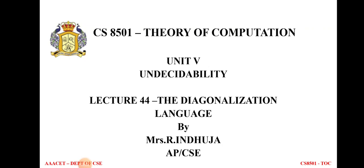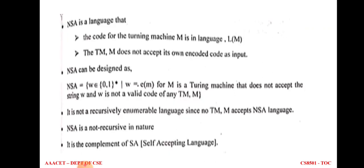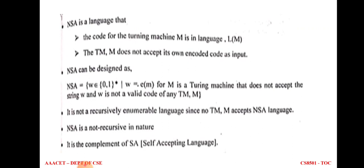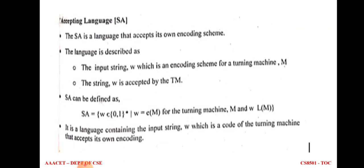In this lecture we are going to see the topic: the diagonalization of language, Unit 5. We will start with non-self accepting language and self accepting language — NSA and SA. Non-self accepting language is for a Turing machine which does not accept the particular input string that does not belong to the language. That language is called non-self accepting language, denoted by NSA. NSA is not recursive, which means it is recursively enumerable, and also not recursively enumerable, because there is no Turing machine to accept the particular input string which does not belong to the language. It is also the complement of self accepting language.